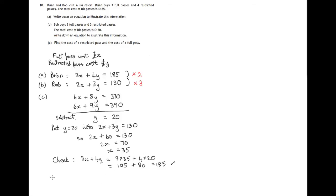So, to find the cost of a restricted pass and the cost of a full pass: the restricted pass costs Y pounds, and Y equals £20. The full pass costs X pounds, and X equals £35.